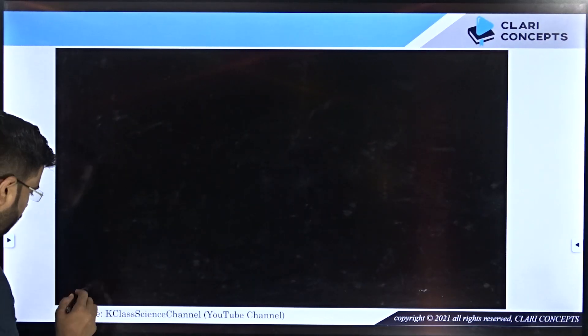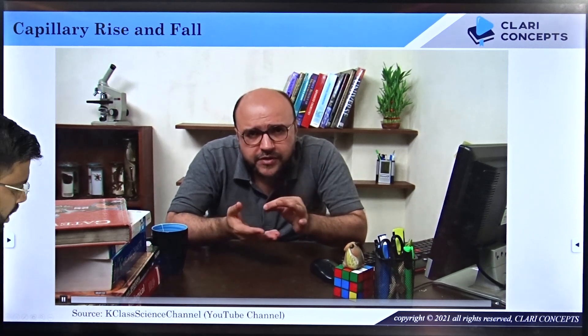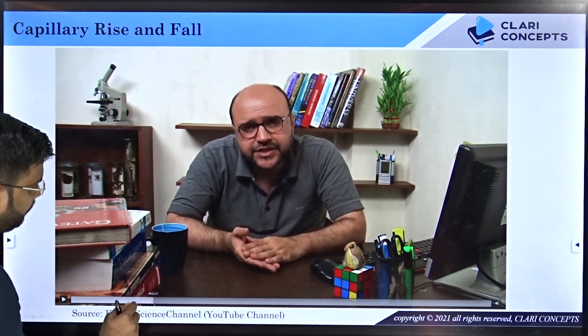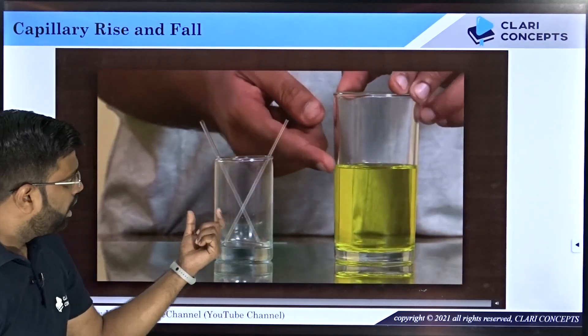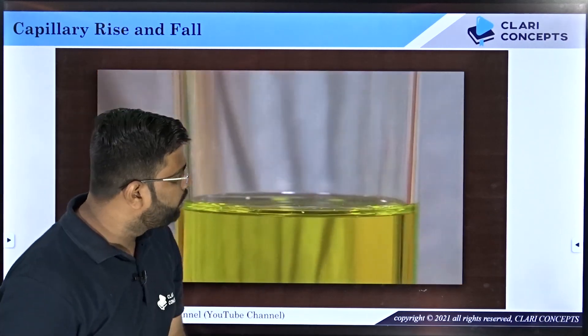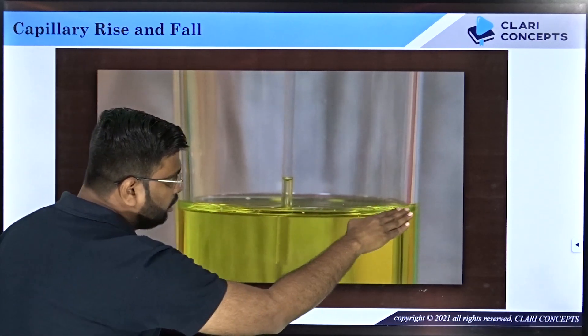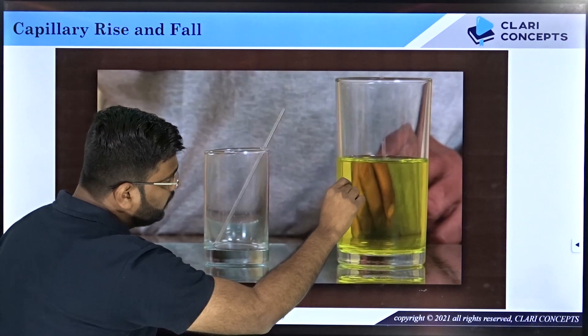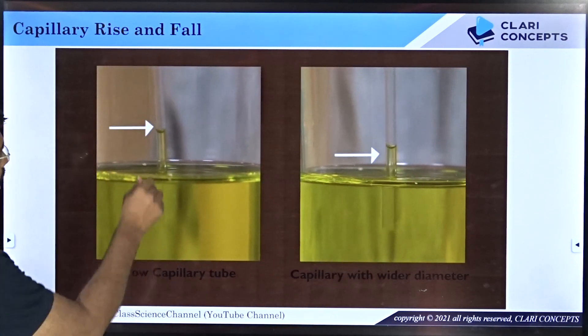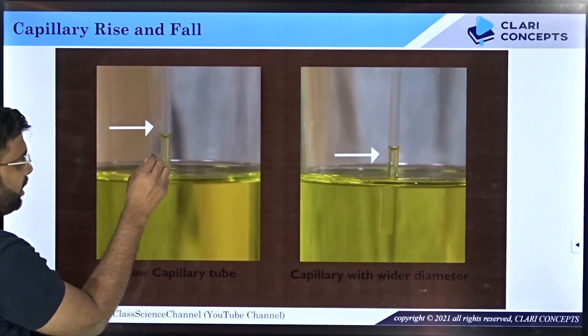Let me show you another video from the K Class Science YouTube channel. Here, a person demonstrates capillary rise and fall using two beakers of coloured water and glass tubes. The moment a glass tube is dipped into the beaker, the water climbs above the normal surface level. With tubes of different diameters, the larger diameter tube shows a lower rise, while the smaller diameter tube shows a larger rise — a simple demonstration of capillary rise.